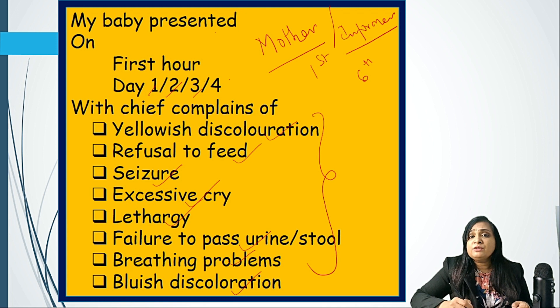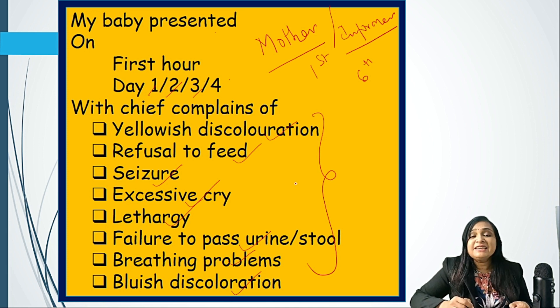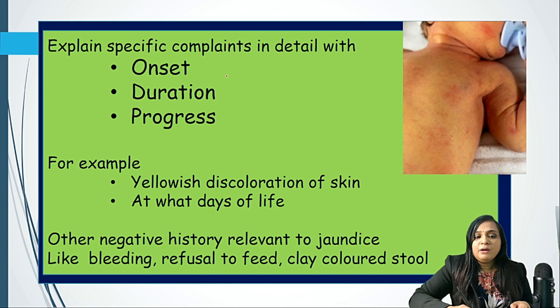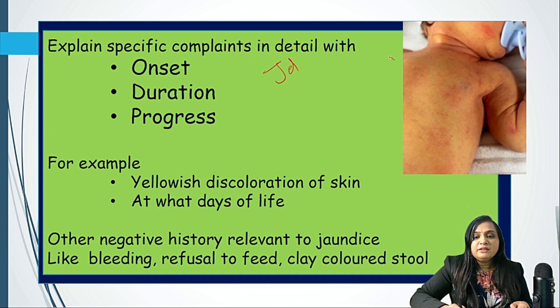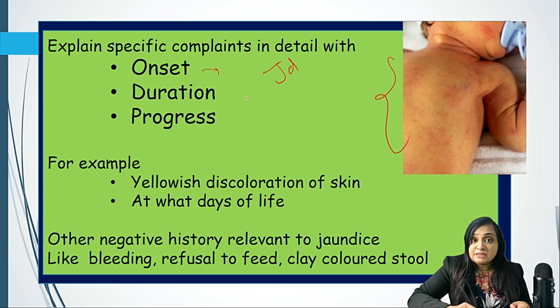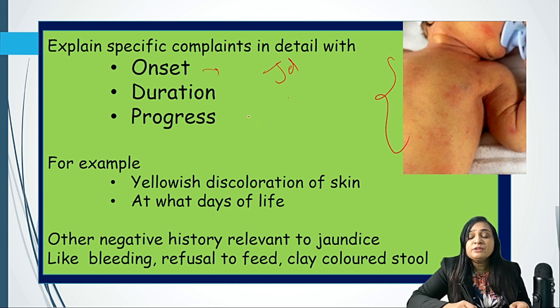If there is a complaint like jaundice, we need to ask: from when — on which day did you notice it? How long has it been present, and how has it progressed? Was it there at the time of birth, or did it appear after? Everything told verbally by the relatives or mother must be recorded. That concludes newborn history part one. The rest will be covered in part two, so stay tuned. Till then, take care of yourself. Study hard as well as study smart.